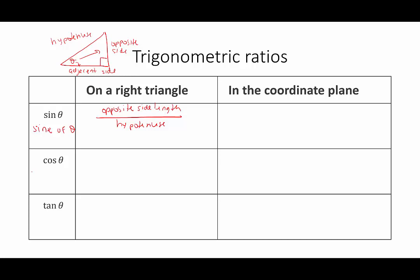Cosine of theta is another trigonometric function, spelled C-O-S-I-N-E. This one looks at the ratio of the adjacent side length over the hypotenuse. Sine and cosine are the two main functions — everything else can be determined based on them.